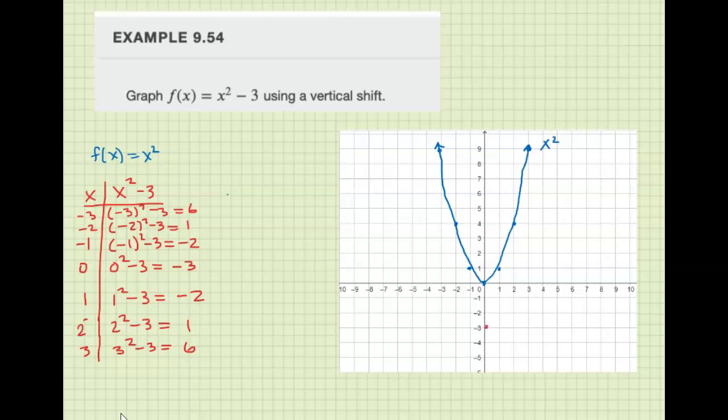We have (0, -3), (1, -2), (-1, -2), (2, 1), (-2, 1), (3, 6), (-3, 6). So this is our parabola here.